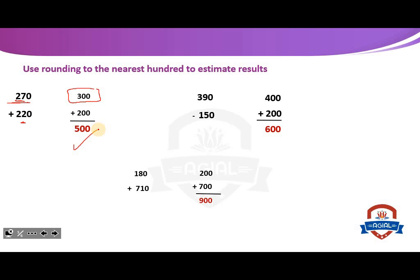Number 2: 390 minus 150. 390 is closer to 400 — look at the tens place: 9, which is rule number 2, so we increase the hundreds by 1 — the number becomes 400. 150 rounded: tens place is 5, so we increase the hundreds by 1 — 150 becomes 200. So the estimated result is 400 plus 200, which equals 600.